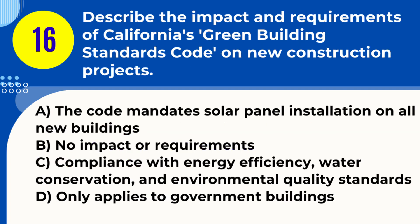Question 16. Describe the impact and requirements of California's Green Building Standards Code on new construction projects. A. The code mandates solar panel installation on all new buildings. B. No impact or requirements. C. Compliance with energy efficiency, water conservation, and environmental quality standards. D. Only applies to government buildings. Answer: C. Compliance with energy efficiency, water conservation, and environmental quality standards.